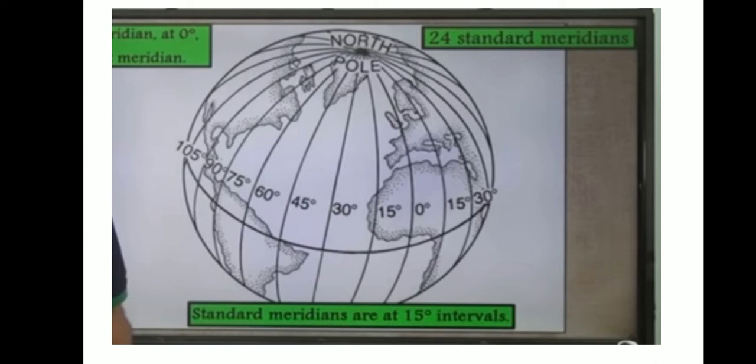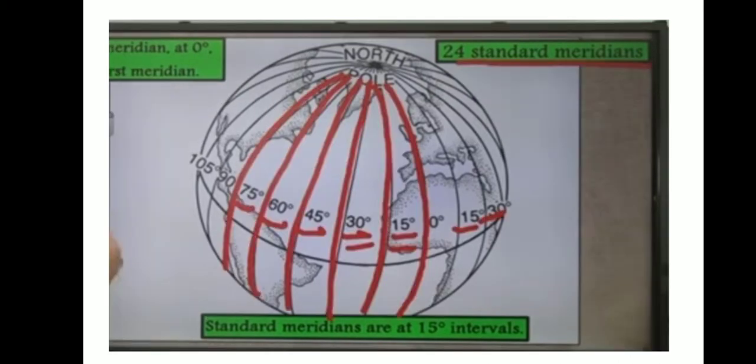Since the earth rotates from west to east, for every 15 degree movement eastward from the Prime Meridian, the local time is ahead of Greenwich by an hour. Similarly, for every 15 degree movement westward, local time is behind by one hour from Greenwich time. This is because places east of Greenwich see the sun earlier, whereas places west of Greenwich see the sun later.